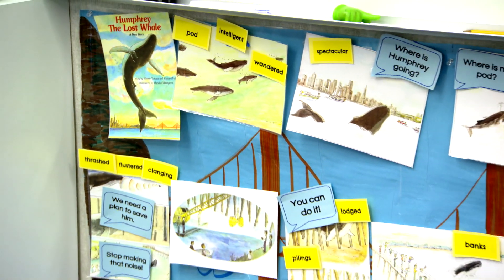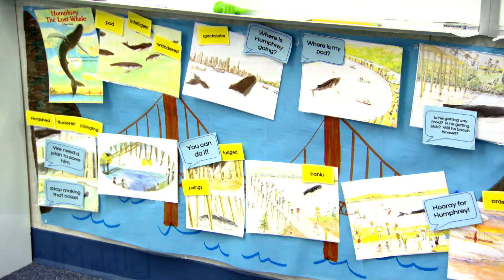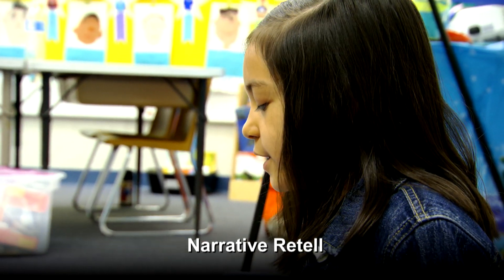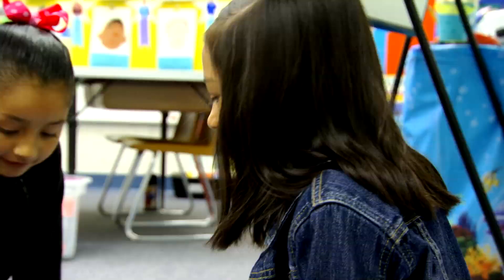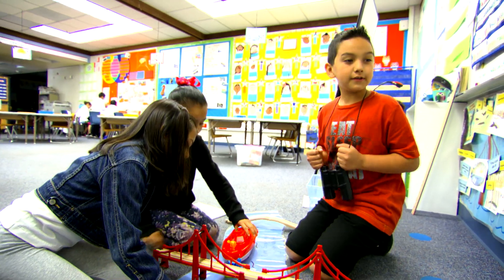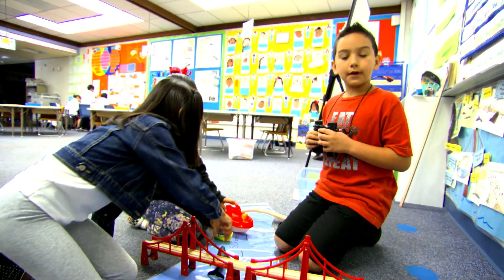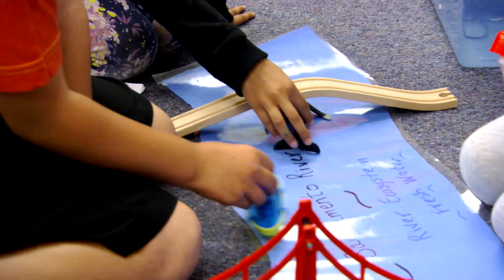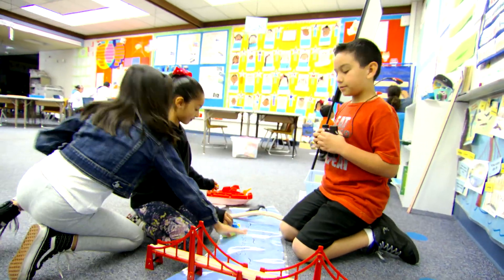Students in a thematic unit engage with literature in multiple ways. There's always one book selected for the narrative — read aloud, orally presented, with students engaged in retelling the story. In this case it's a story about a whale in the San Francisco Bay ecosystem. Humphrey swims away from his pod and enters the San Francisco Bay. He swims up the Sacramento River and the river gets narrower. He squeezes through the tiny bridge. The Coast Guard and scientists make a plan.